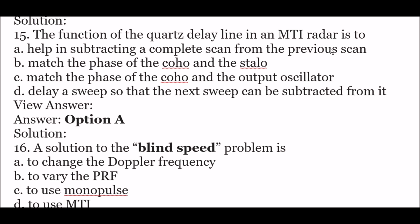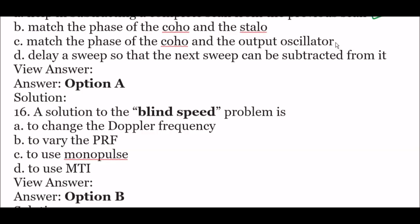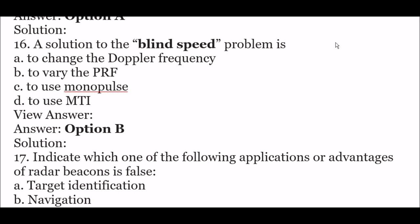Next question: the function of the quartz delay line in an MTI radar is to — option A: help in subtracting a complete scan from the previous scan, option B: match the phase of the COHO and the STALO, option C: match the phase of the COHO and the output oscillator, option D: delay sweep so that the next sweep can be subtracted from it. The right answer is option A — help in subtracting a complete scan from the previous scan.